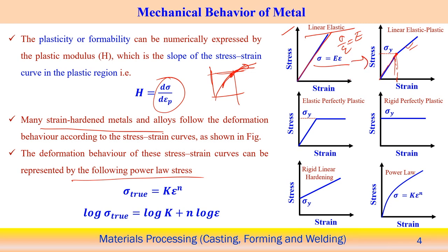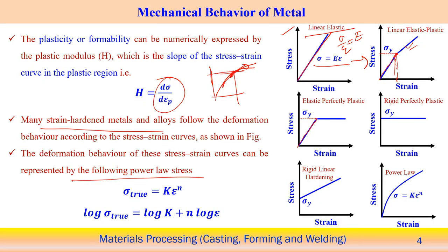Material can also behave as elastic, perfectly plastic material. In that case, the stress-strain diagram shows a constant slope up to the yield point, and after that the stress remains constant with further strain. It means that elastic deformation is there and then perfectly plastic — in this graph there is no strain hardening effect. After yielding starts, the stress value remains constant, which is equal to the yield point of this particular material. That is what we call the perfectly plastic material.